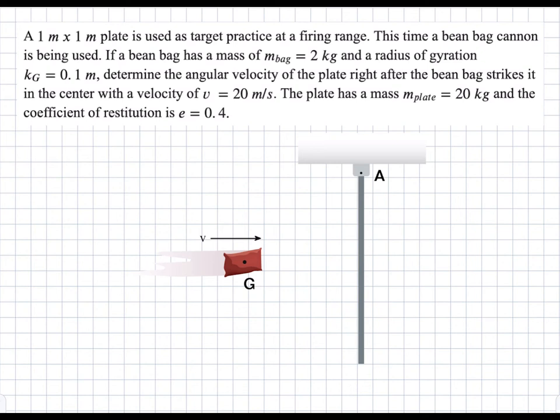In this problem, we have a 1 meter by 1 meter plate that is being hit by a beanbag with mass 2 kilograms. We're asked to determine what is the angular velocity of the plate right after the beanbag strikes. We're given the beanbag's velocity, the mass of the plate, the radius of gyration, and the coefficient of restitution. This is clearly an angular momentum problem because we're trying to find the angular velocity.